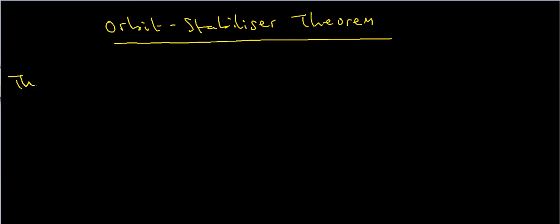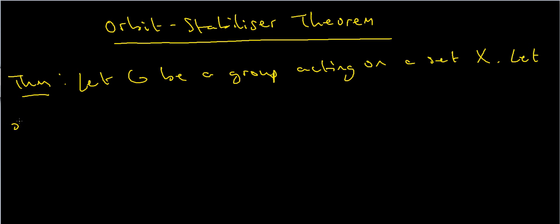So here's our theorem. Just as before, when I define the orbits and stabilizers, I'm going to let G be a group acting on X. So X is a set and G is a group. Let G be a group acting on a set X, and I'm also going to let little x be an element in the set big X.